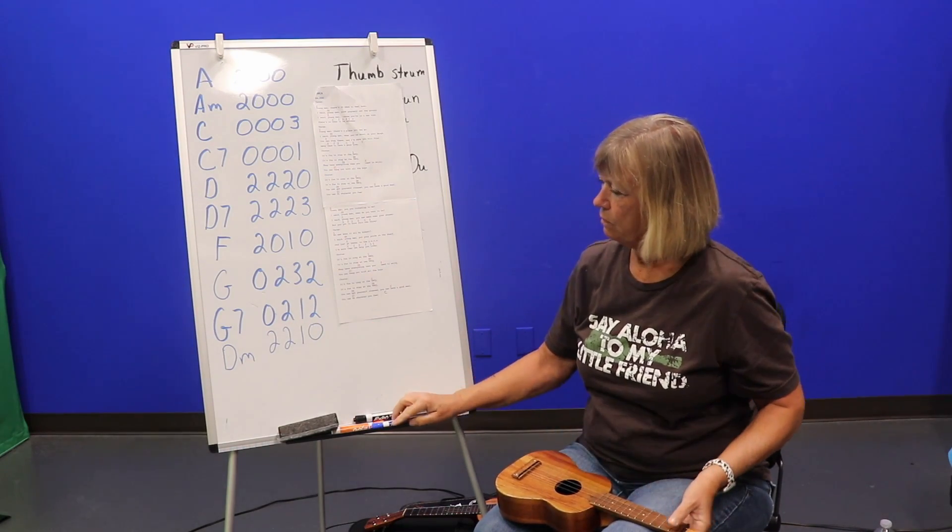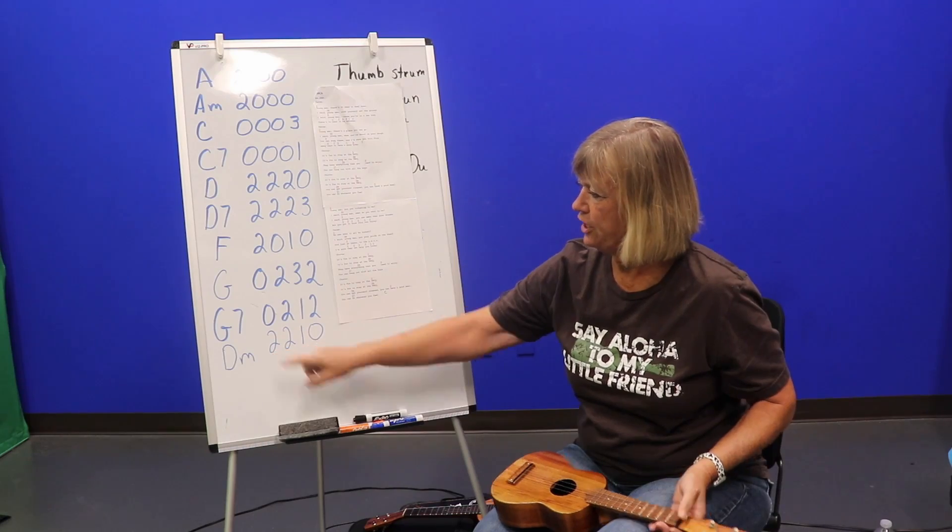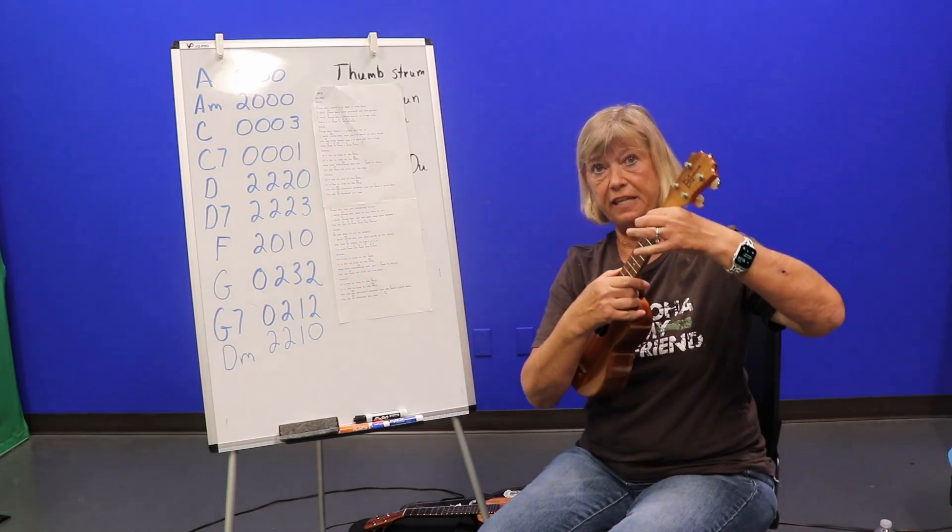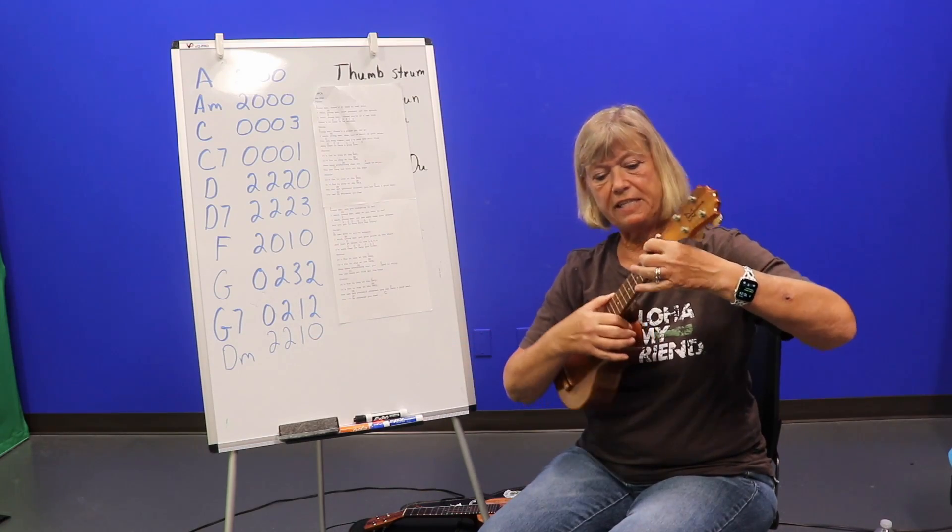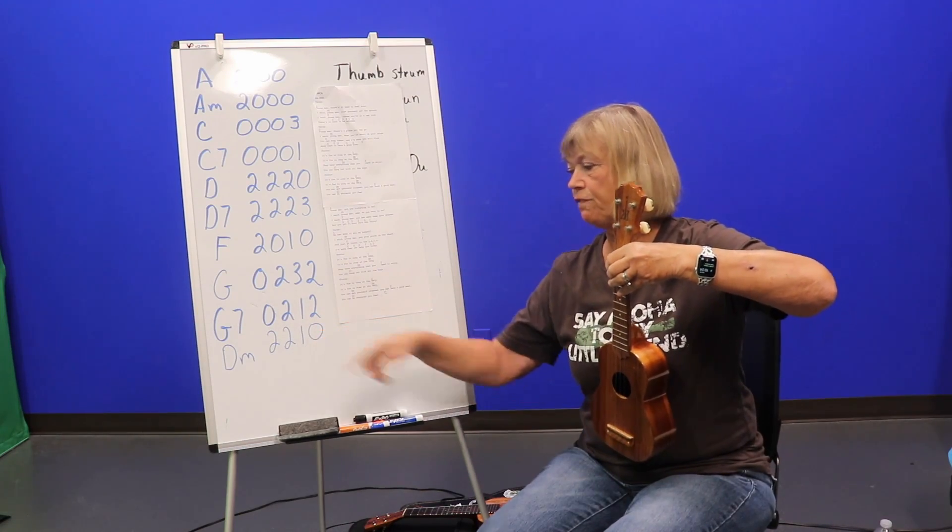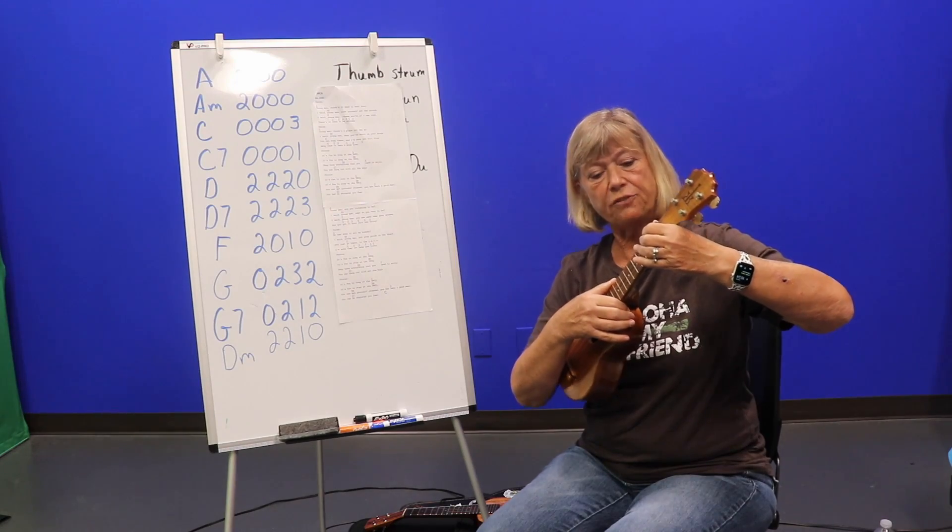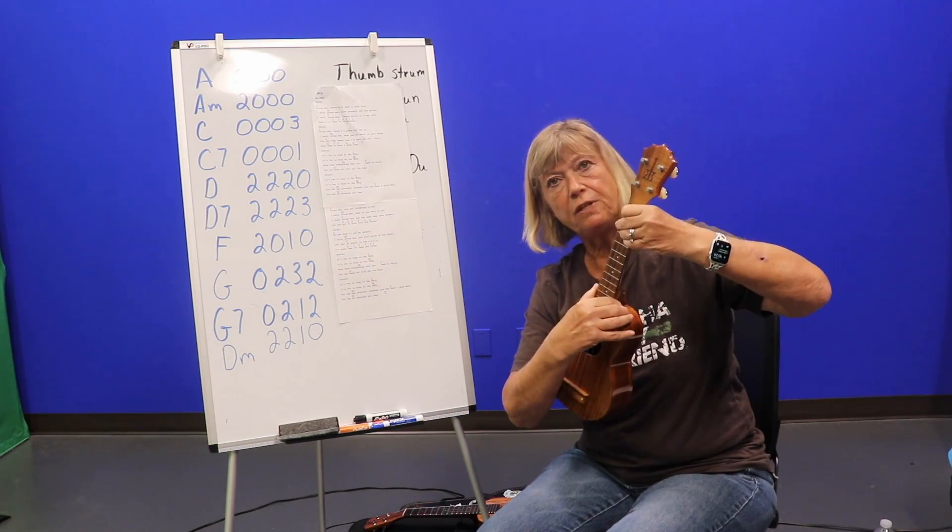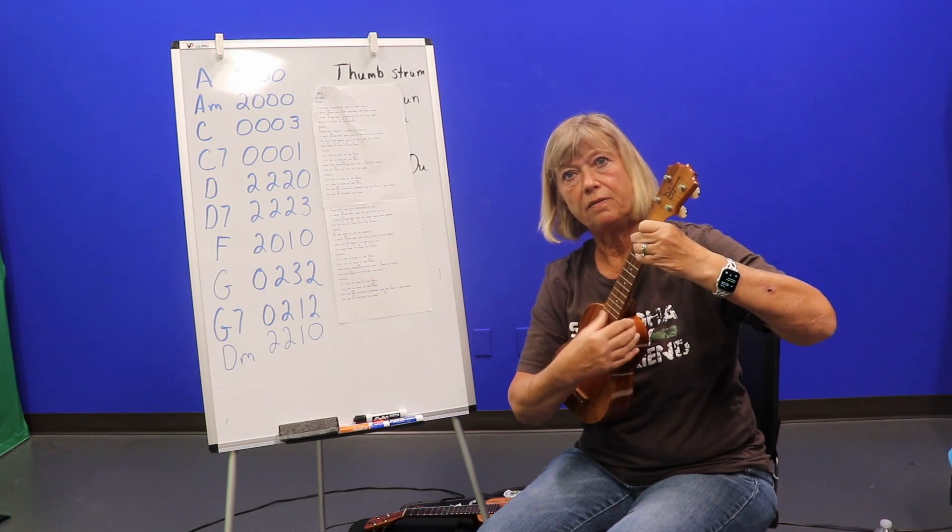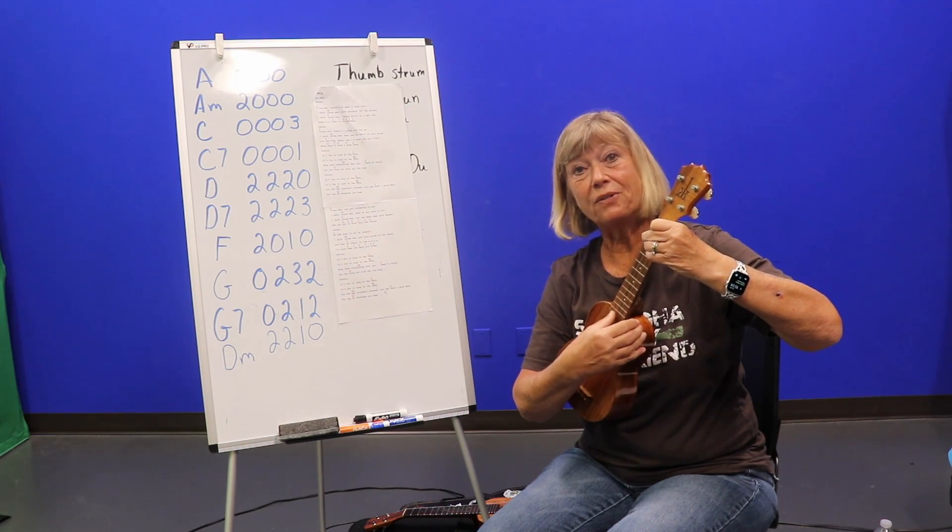So that means on the G string, you have a finger on the second fret. You have another finger on the second fret of the C string. And then a first finger on the E string. So it looks more like this. The first finger goes here, and these two kind of curl up. There's your D minor chord.